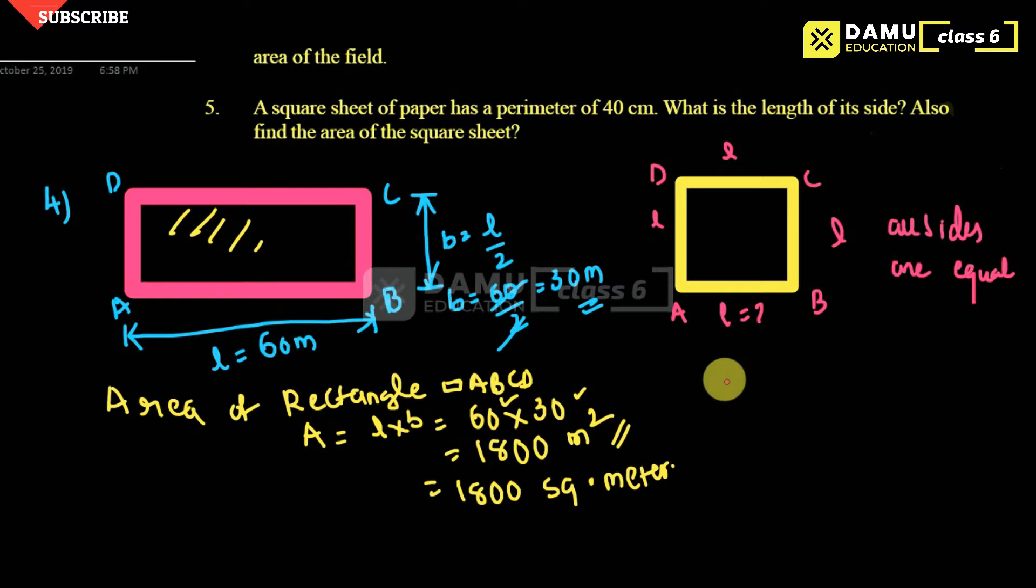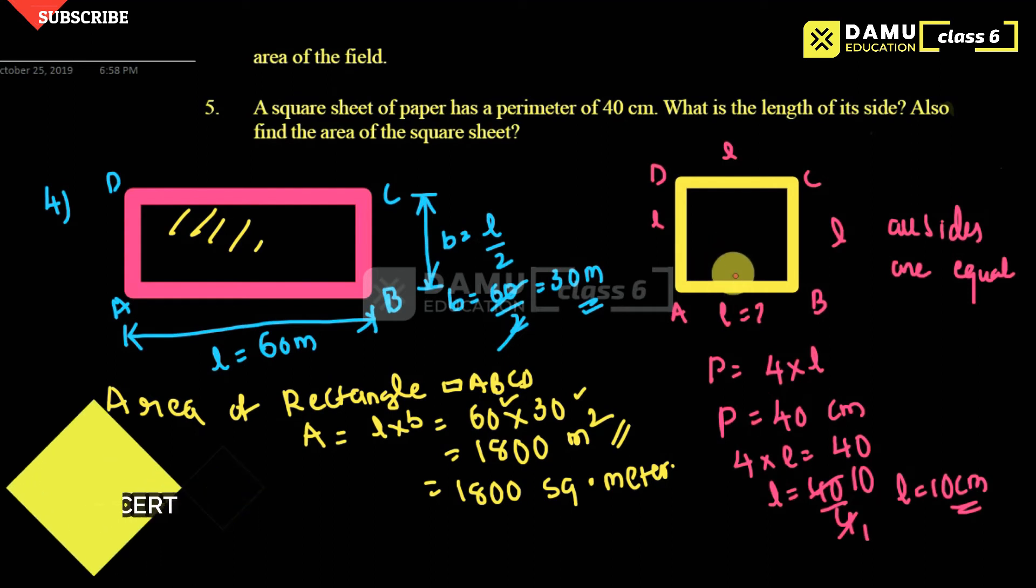Perimeter will be 4 into length. That is AB, BC, CD, DA all will add up. Adding means we get 4 into L. The perimeter is given as 40 centimeters. Then 4 into length equals 40. L equals 40 by 4, which is 10. So length will be equal to 10 centimeters.